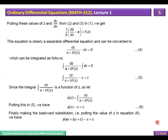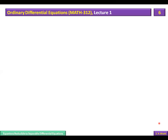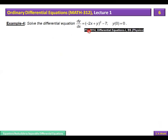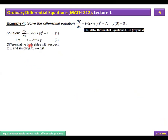This is the general method for a differential equation which is not directly separable. Now we have an example. The equation is not separable, so we substitute z = -2x + y to make it separable. After this substitution, the differential equation becomes separated. We get dz/dx + 2 from the substitution, since dz/dx = -2 + dy/dx.